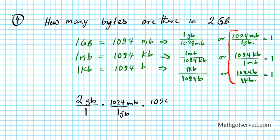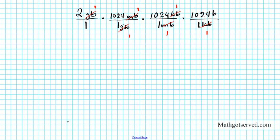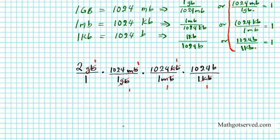Next, we multiply by 1,024 kilobytes per 1 megabyte — this takes us from megabytes to kilobytes. And finally, 1,024 bytes per 1 kilobyte — this takes us from kilobytes to bytes, which is exactly what we want. The gigabytes divide out, the megabytes divide out, and the kilobytes divide out. We're simply left with bytes, and we multiply: 2 times 1,024 times 1,024 times 1,024 bytes.